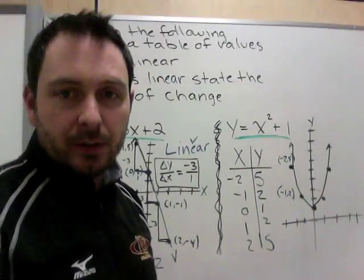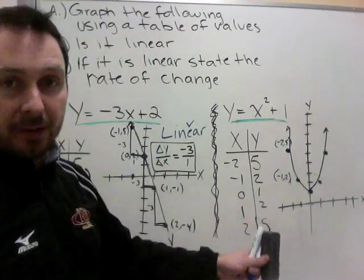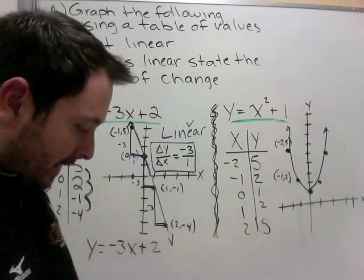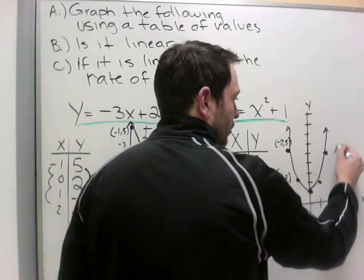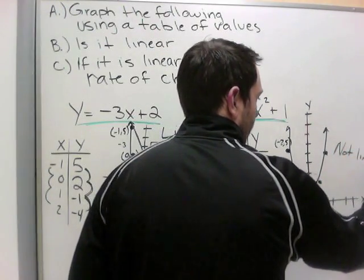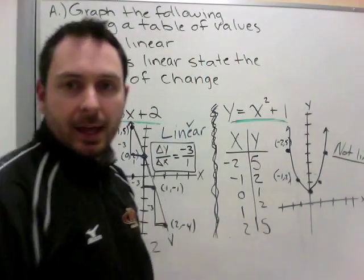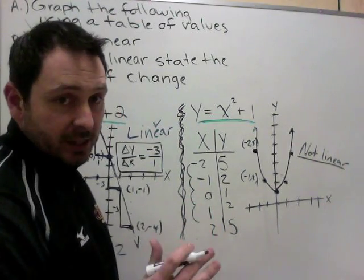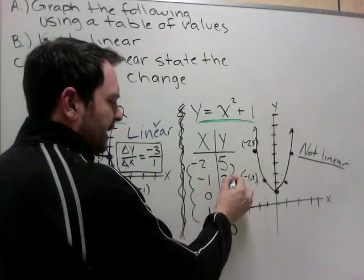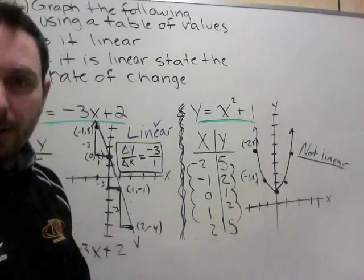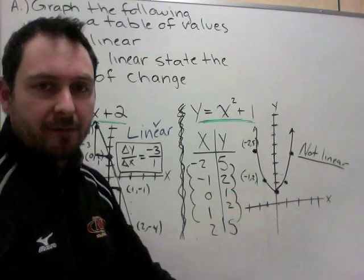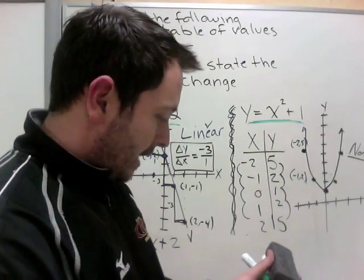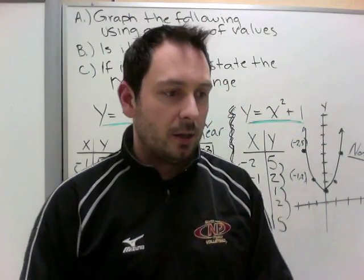We've now graphed using a table of values. Is y = x² + 1 linear? No — the graph has curved lines, so it is not linear. You can also confirm from the table: x goes up 1, 1, 1, 1 — constant there. But on the y side: down 3, down 1, up 1, up 3 — not constant. It needs to be the same every time for a linear relationship. Because there is no linear relation, there is no rate of change.